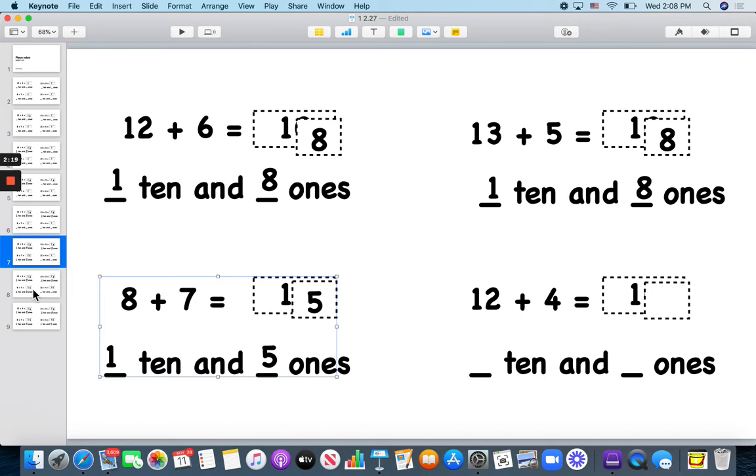Now we have 12 plus 4. If I were to figure this out: 12, 13, 14, 15, 16. That is 16.